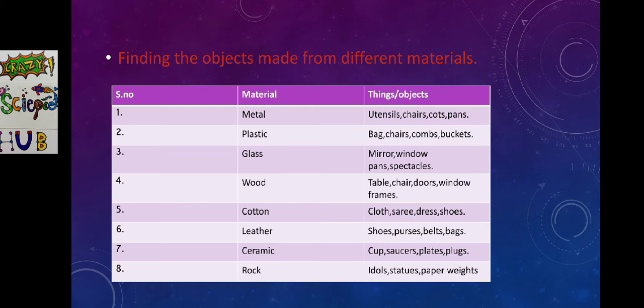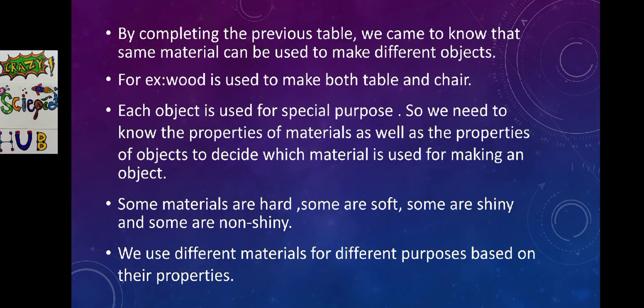In the similar way, wood, cotton, leather, ceramic, and rocks are also used to prepare different objects. By completing this table, we came to know that the same material can be used to make different objects. For example, wood is a material used to make both tables and chairs. Each object is used for a special purpose.